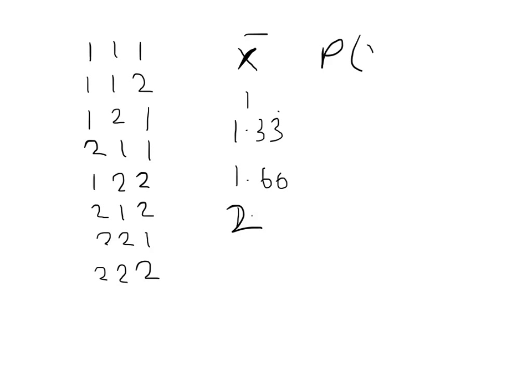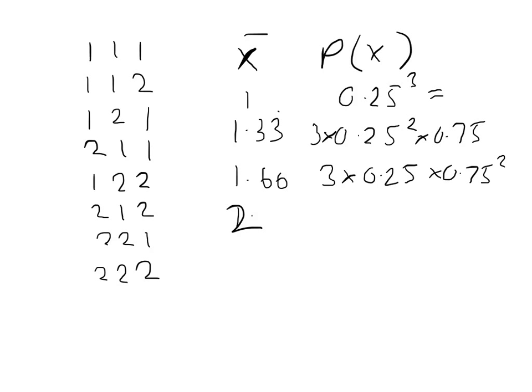Now the probabilities to give the full probability distribution are going to be 0.25 cubed, or 3 times 0.25 squared times 0.75 for the 2 pence, 3 because of the 3 positions. So I'm covering these 3 possibilities. Then for the 1.66, again there's 3 ways that can be done, so 3 times 0.25 times 0.75 squared, and finally 0.75 cubed for the 3 two pences.